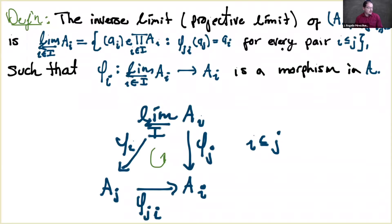Remember that to be commutative is just to say that the composition of the morphisms should be exactly what we expect — in other words, that going in one direction and then following by another direction is the same as going directly from the first to the last. So after composition, commutativity holds.